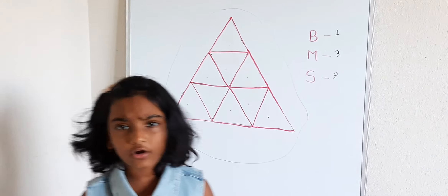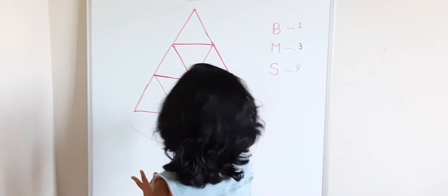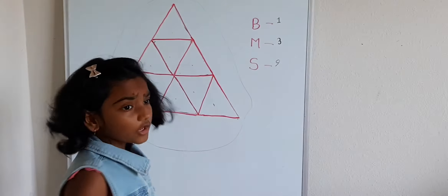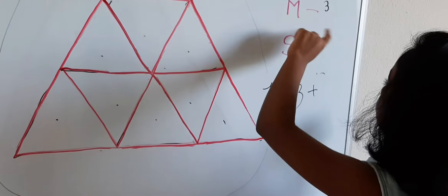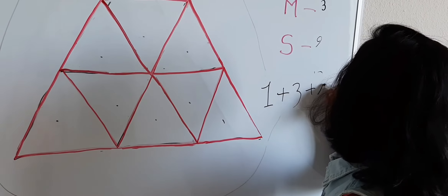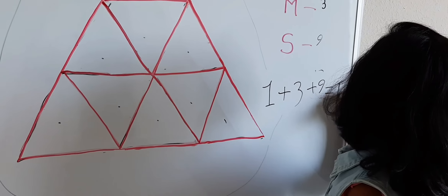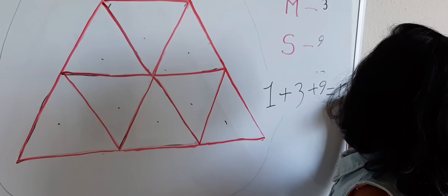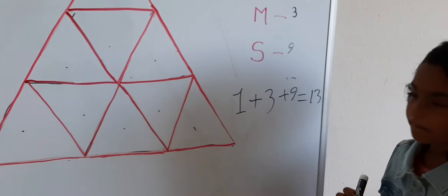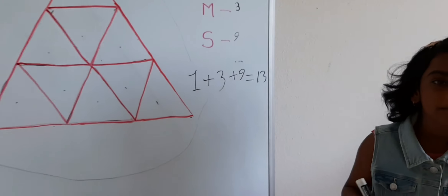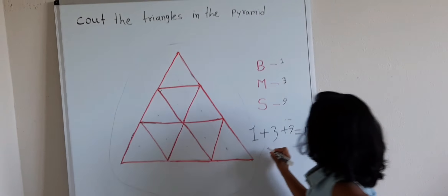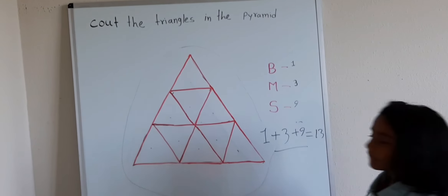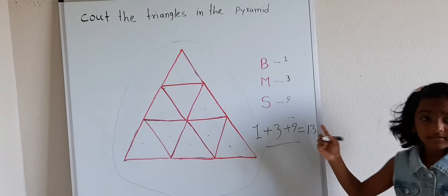How many are there in all of them? One, three, and nine equals one, three, and ten. The answers are right here.